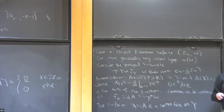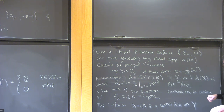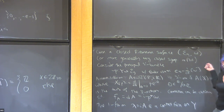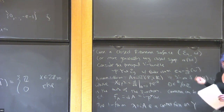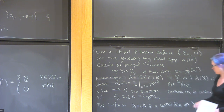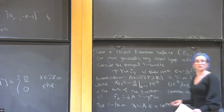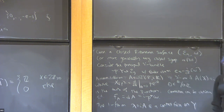You need the symplectic form to be a rational cohomology class, but this is automatic for a surface. For a general manifold, you need to specify that. You can find such an omega by multiplying by a constant — for surfaces you could just take the standard area form.